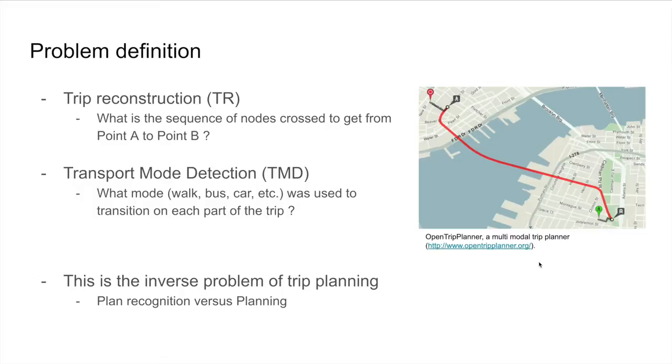Problem definition: In this presentation we're going to talk about two main problems—trip reconstruction and transport mode detection. Trip reconstruction is simply trying to determine the sequence of nodes crossed by someone to go from point A to point B.